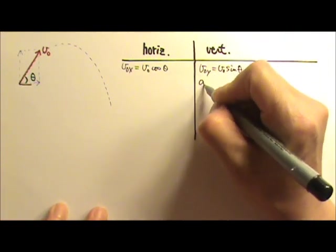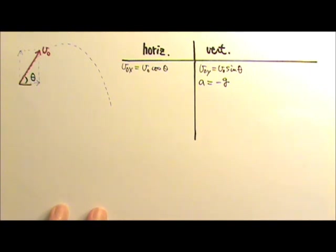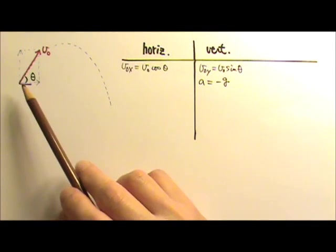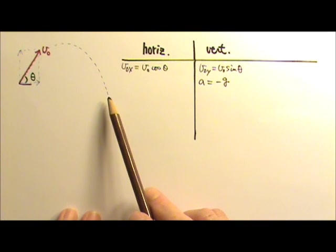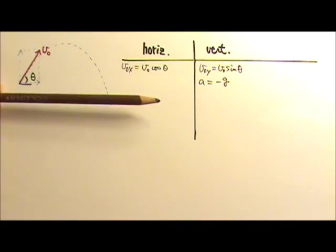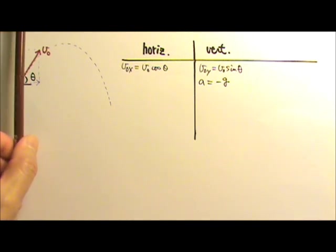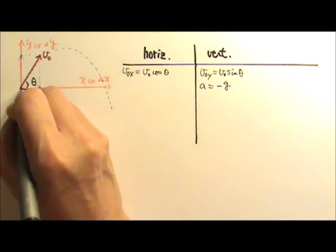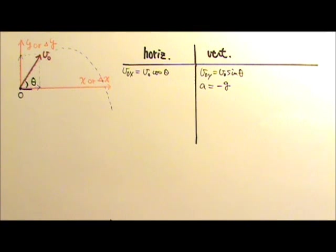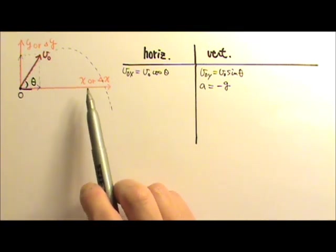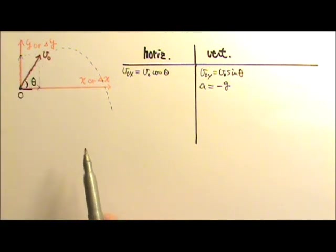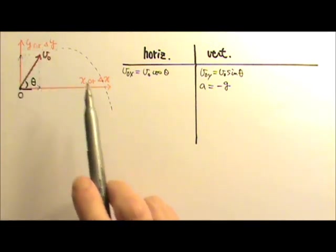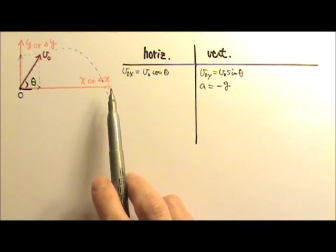Again, the acceleration on the vertical side is negative g. Our goal here is to show that the shape of this path is a parabola. Since this path represents the position of the projectile at various moments, we can make a horizontal axis for the horizontal position x, and the vertical axis for the vertical position y, like this. If we make the initial position the origin, then we can conveniently make these axes delta x and delta y. To show this trajectory as parabolic, we just have to show that delta y can be written as a function of delta x, and that it is a second degree equation.